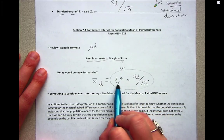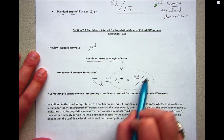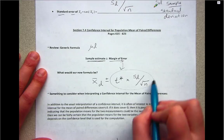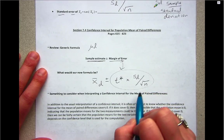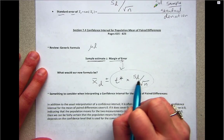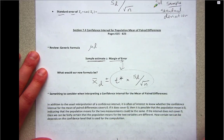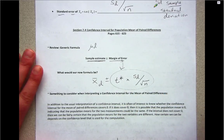So that T distribution accounts for the extra sample estimates. And then we're using standard error instead of standard deviation because we won't know the population standard deviation. So this is our formula.